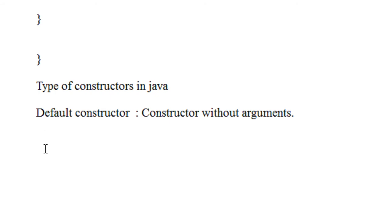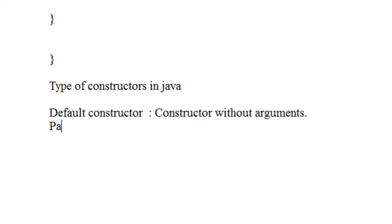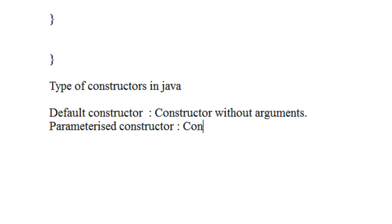The second type is the parameterized constructor. A constructor with arguments is called a parameterized constructor.